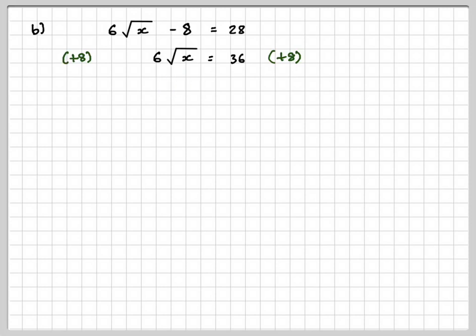The opposite of multiplying by 6 is to divide both sides by 6. So on this side we get root x, and 36 divided by 6 is 6.